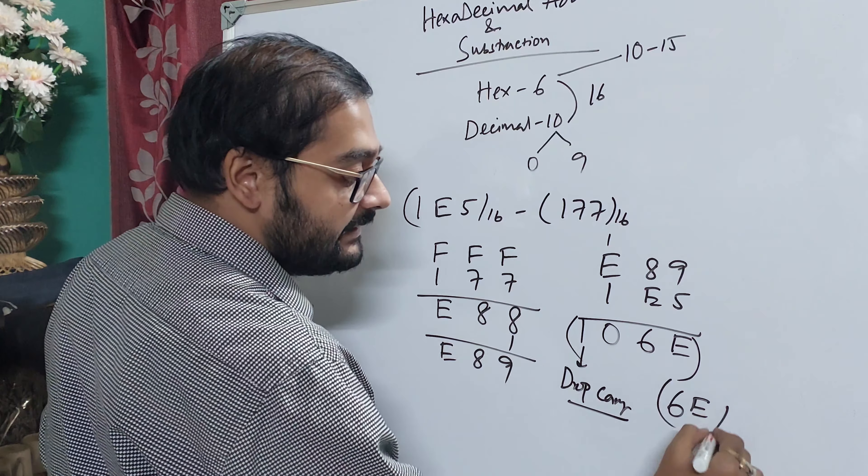F and F, the same value is 15. If I add 15 plus 15, then I get 30. So if we subtract 16 from 30, then 30 minus 16 is 14. 14 means I write E, carry 1. 1 plus F, F value is 15, so 15 plus 1 is 16. 16 plus 1 means 17.